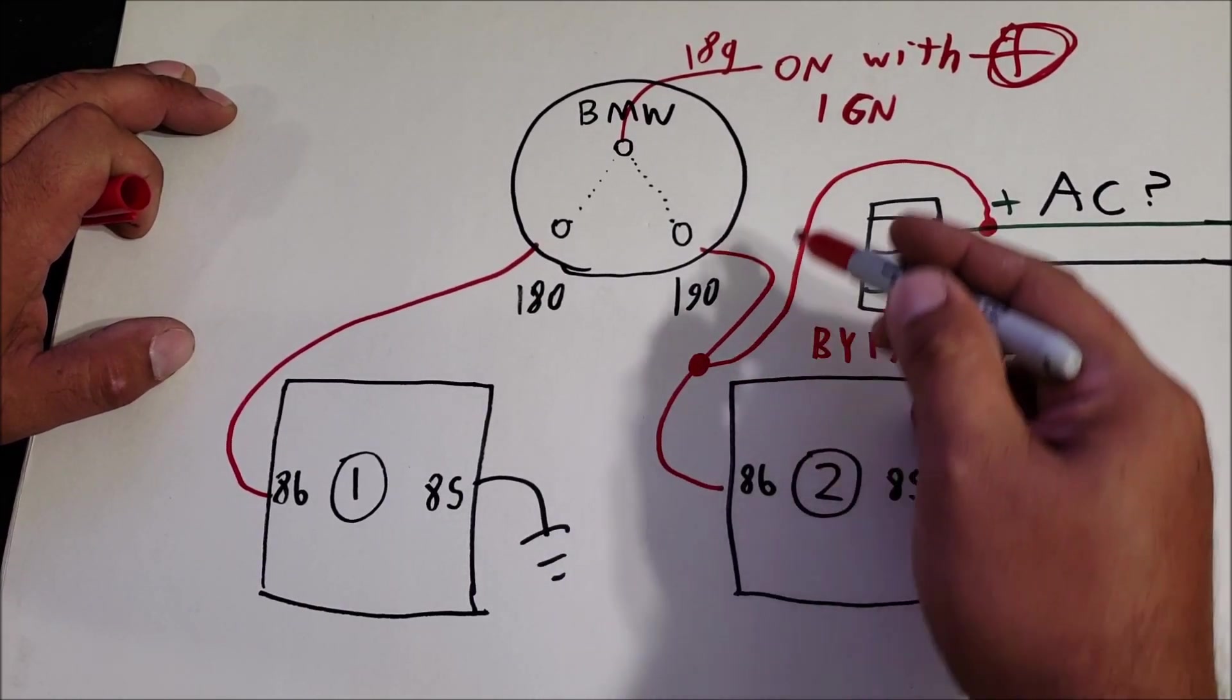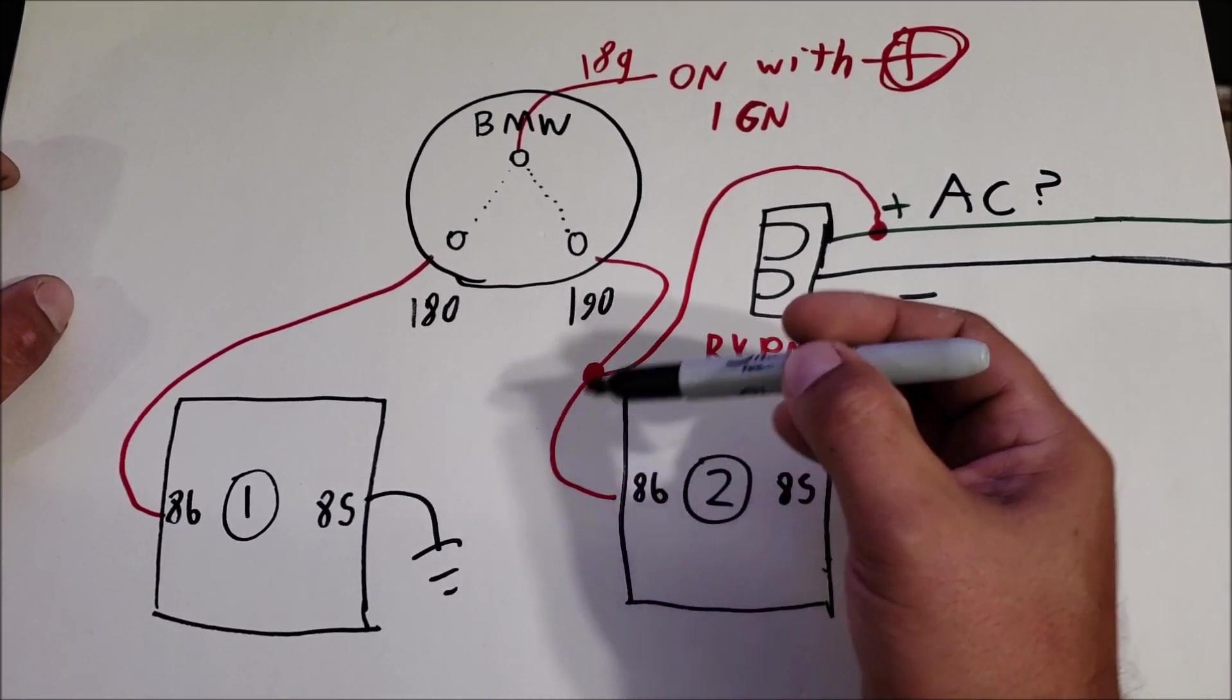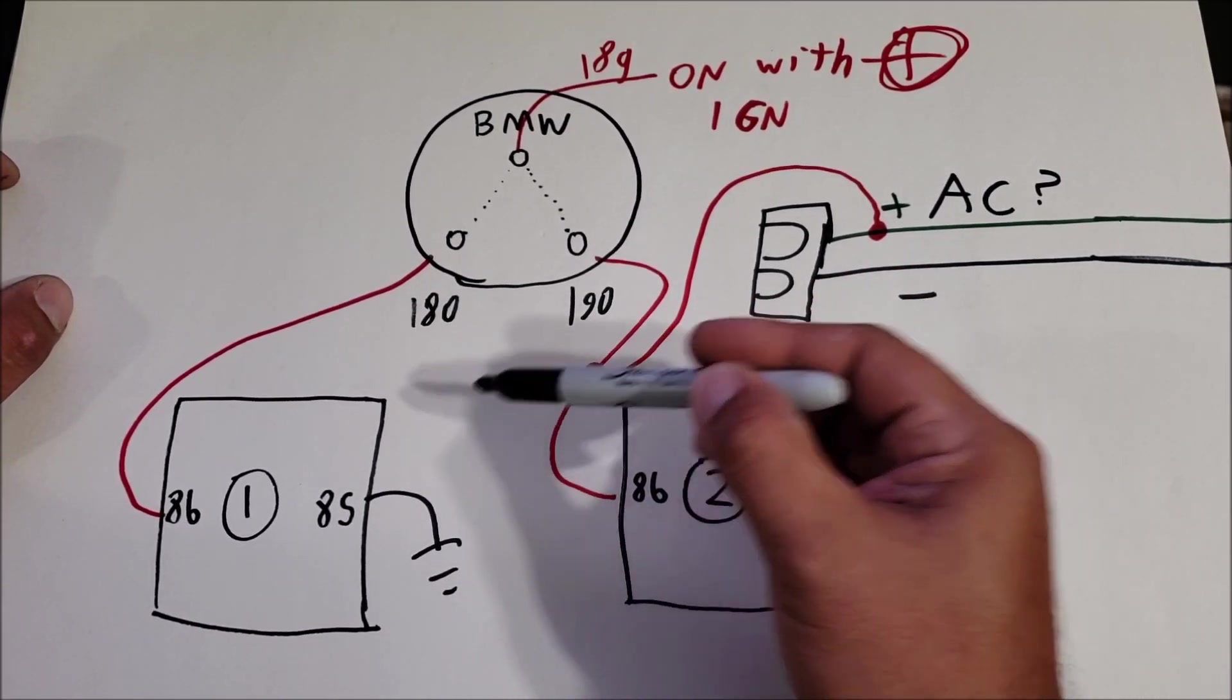If you're running the high speed low speed with the five pin relay in the center, you're going to bypass it the same way to 86 just like that.